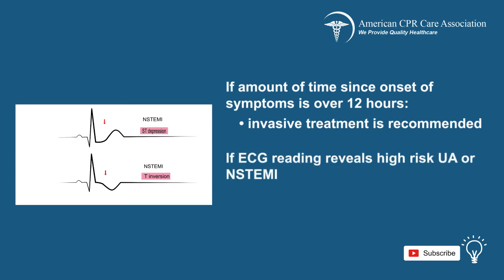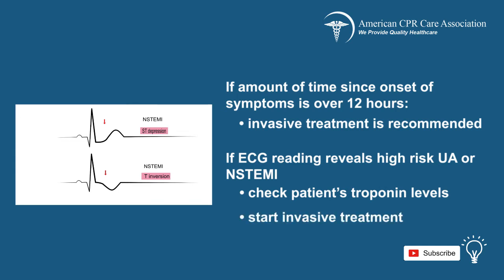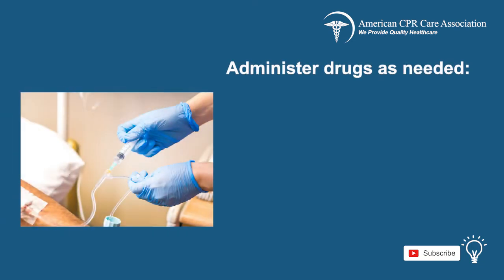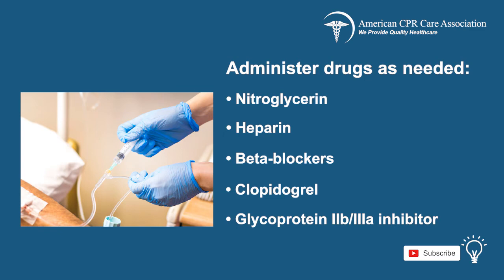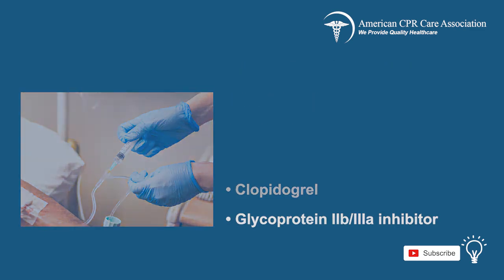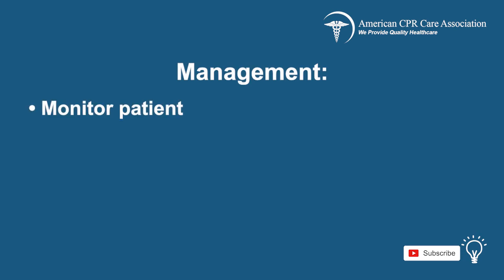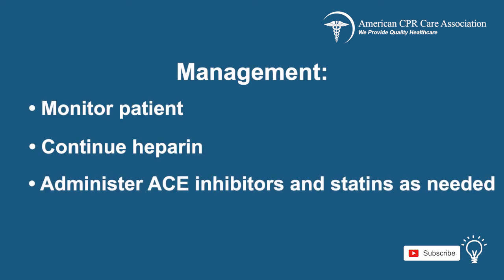If the ECG reading reveals high-risk UA or NSTEMI, then check the patient's troponin levels and start invasive treatment. You may also need to administer some of the following drugs as needed: nitroglycerin, heparin, beta-blockers, clopidogrel, or a glycoprotein 2B3A inhibitor. Monitor the patient and continue heparin; you may add ACE inhibitors and statins if necessary.